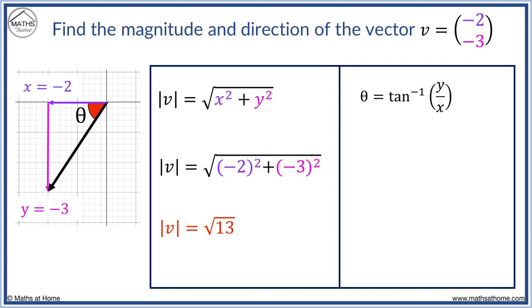The angle is found by substituting y equals -3 and x equals -2. Evaluating arc tan of -3 over -2 on a calculator, theta equals 56.3 degrees. However,